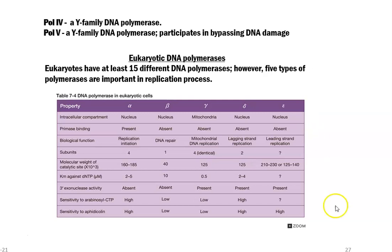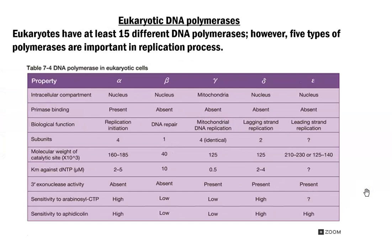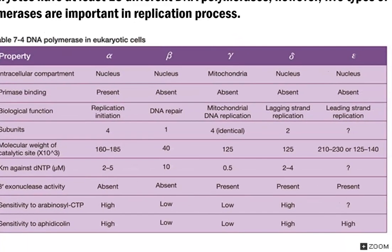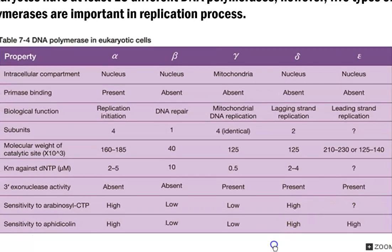The next group is eukaryotic DNA polymerases. Eukaryotes are found to possess at least 15 different types of polymerases, but five types are more important from the standpoint of the replication of eukaryotic chromosomes. They are listed as alpha, beta, gamma, delta, and epsilon polymerases. You can go through the various properties of these polymerases.